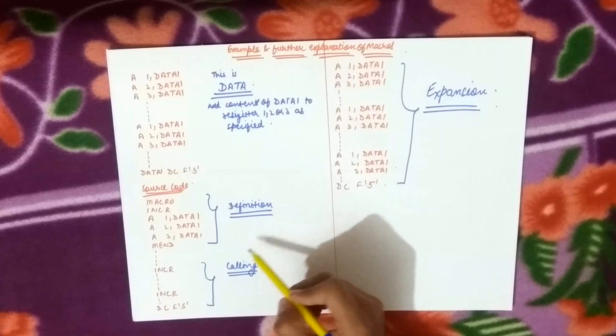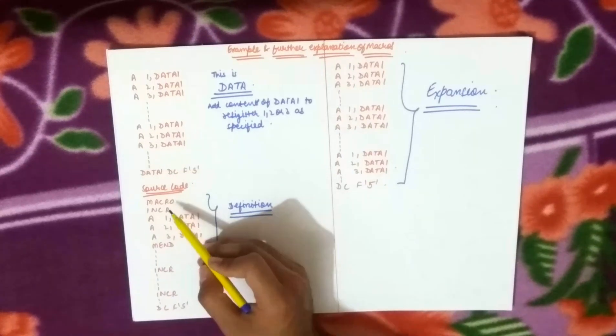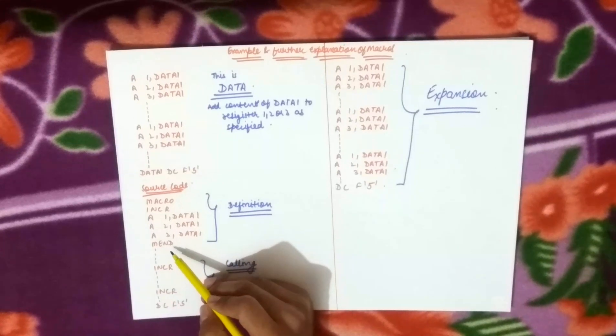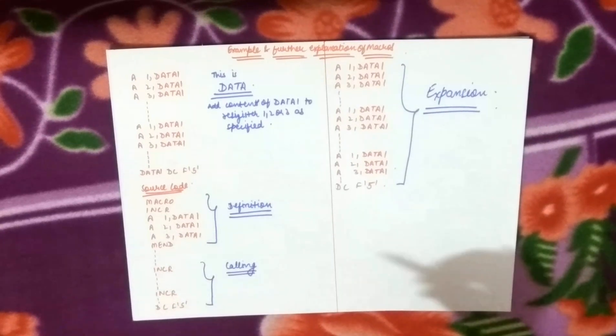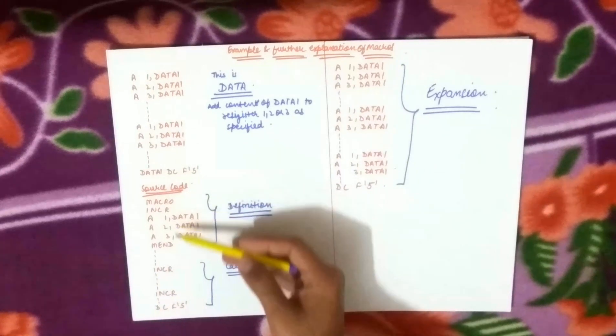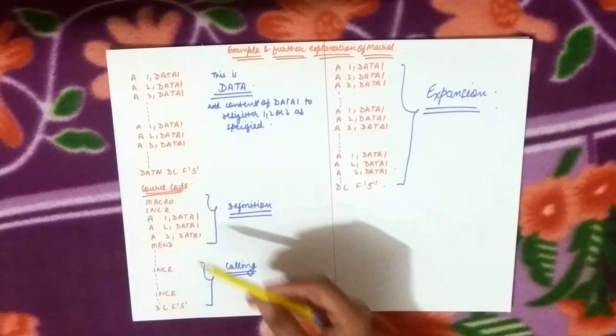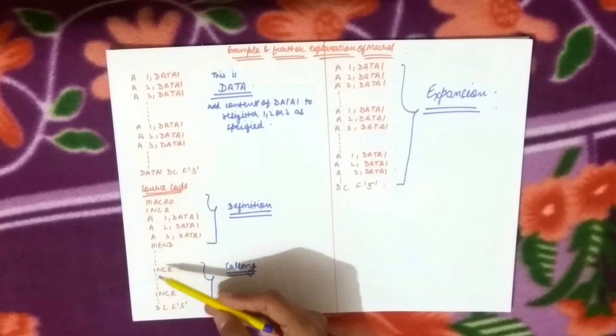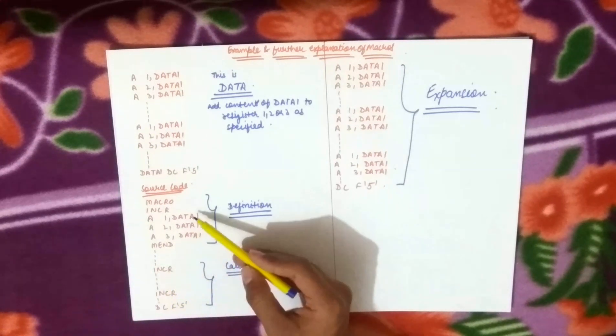Next is macro definition - macro start and mend and end. Now I will write my source code, this is my source code. This source code, this macro I will write, then there are more lines of code, then I will write...